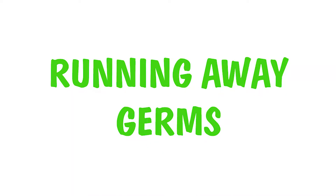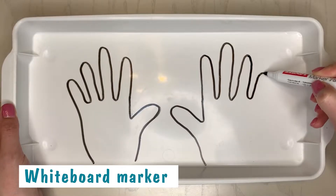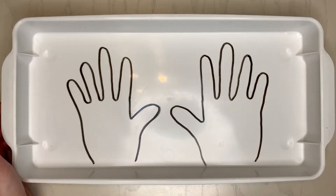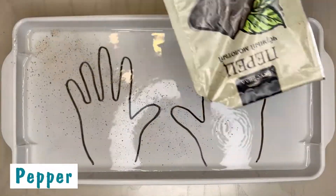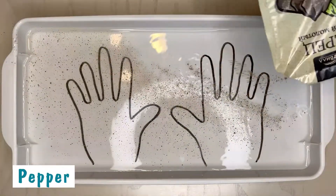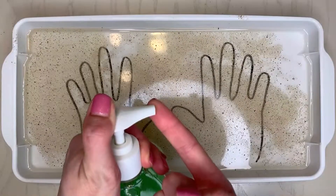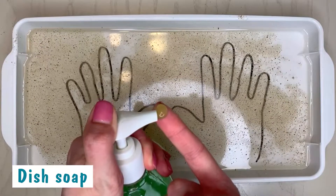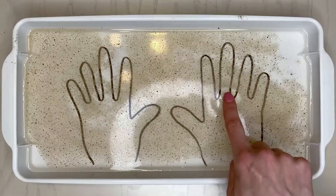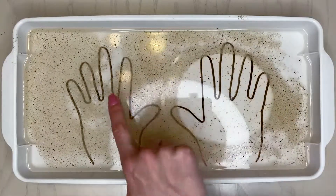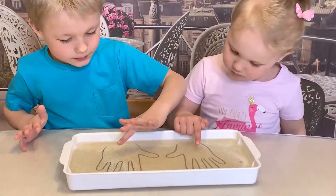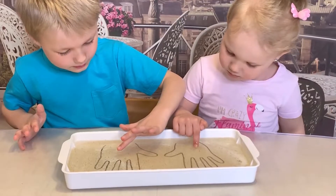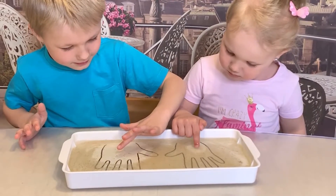Running away germs. Water has surface tension — it means that water molecules on the surface are attracted downwards and to the sides by other molecules. When dish soap touches the surface, it breaks the surface tension. This causes the pepper to float away like it's scattered off the dish soap.